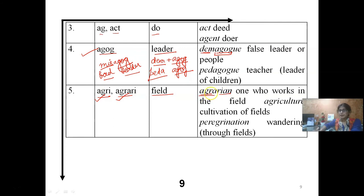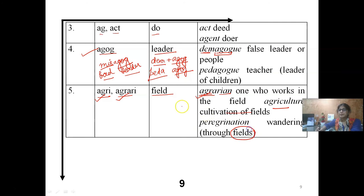PEDAGOG — PEDA means child/children, AGOG means leader — a leader of children. MISAGOG — MIS means bad, AGOG means leader — that is a bad leader. So AGOG means leader. Next root: AGRI or AGRARY means field. AGRARIAN — a person who works on fields. AGRICULTURE — cultivation of fields. PEREGRINATION — wandering through the fields. So AGRO/AGRI means field — anything relating to the word field includes these two roots.